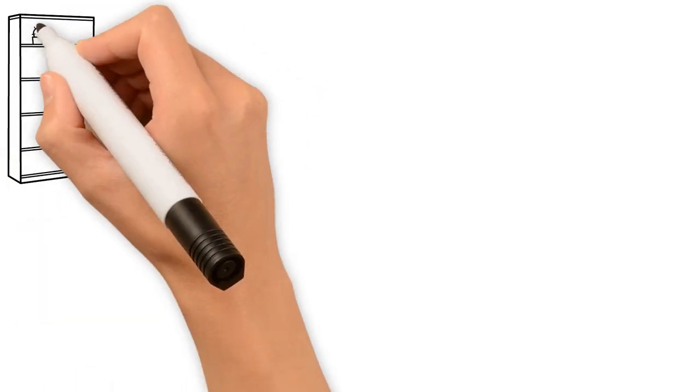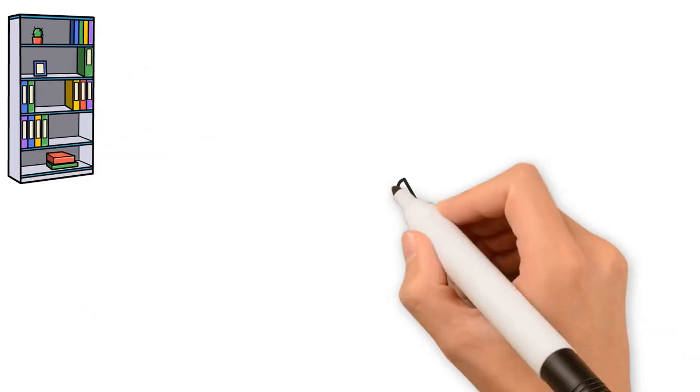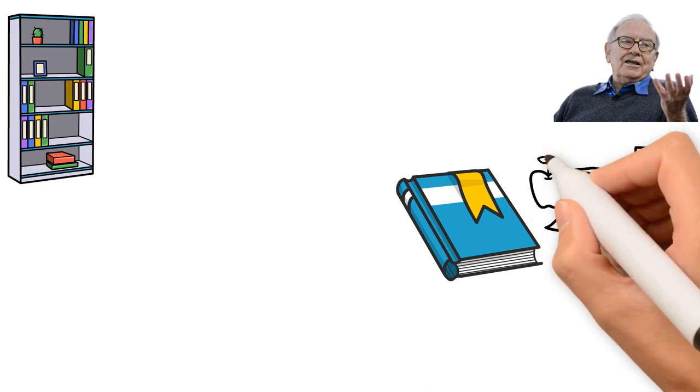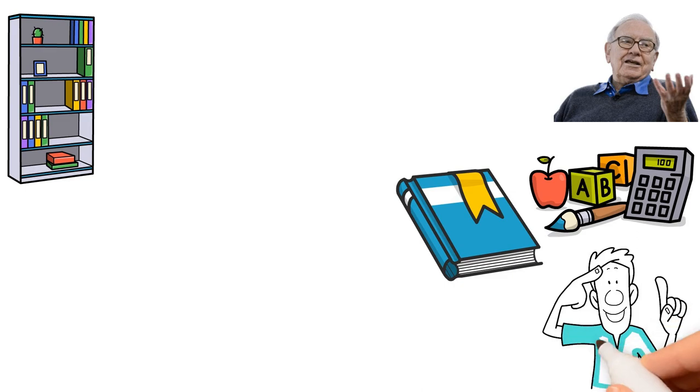Imagine you're at a yard sale and you spot a vintage comic book for a dollar. You know it's worth way more, so you snag it. That's value investing, and it's how Buffett rolls. He picks stocks like picking ripe apples. Only the juiciest, most undervalued ones make it into his basket.